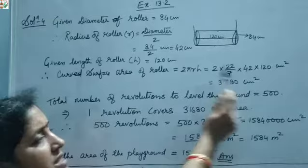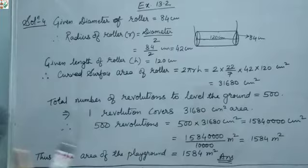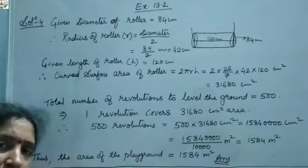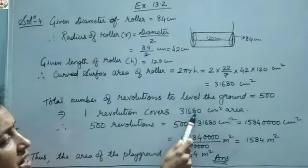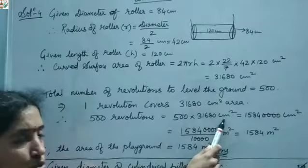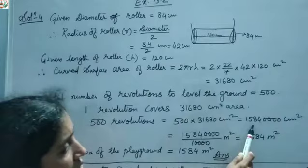On multiplication and simplification we get 31,680 cm². This is the area covered in one revolution. The roller takes 500 revolutions to complete the playground, so 500 revolutions will cover 500 into 31,680 cm².